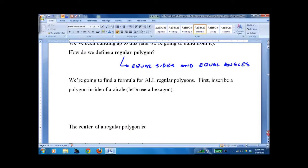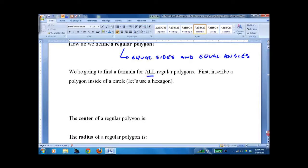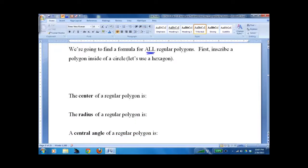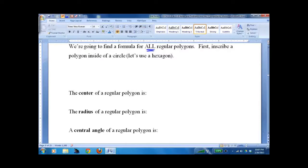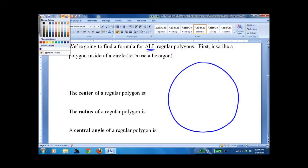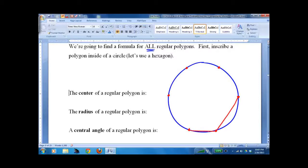So let's find a formula for all regular polygons. And it sounds nice but the reality is you're going to have to do a lot of work. So take a circle and inscribe a polygon. I'll do a hexagon. Not perfect but not that bad.